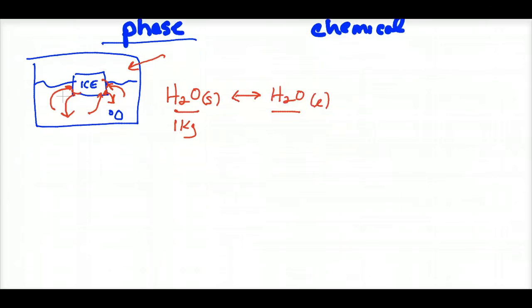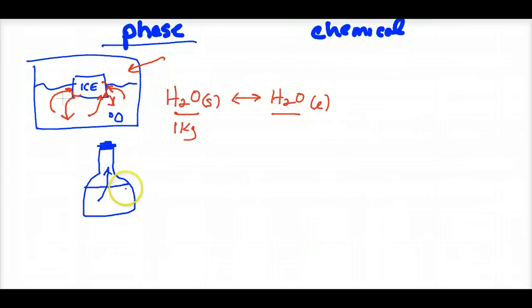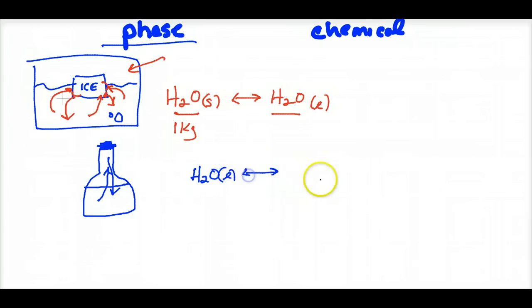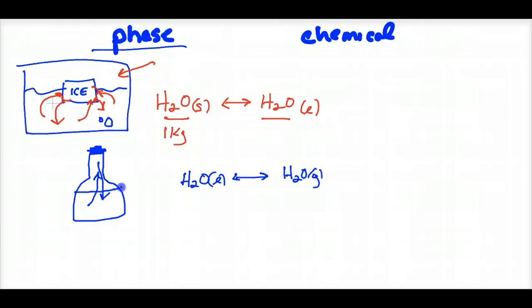Another phase equilibrium example: a stoppered bottle of water. The rate of evaporation equals the rate of condensation — H2O liquid ⇌ H2O gas. The amount of liquid stays constant because equilibrium is established. That's why a stoppered bottle doesn't lose liquid — the rates are equal and concentrations stay constant.